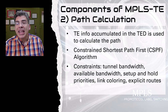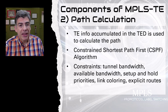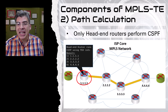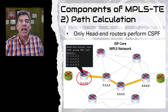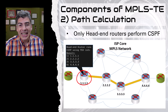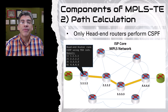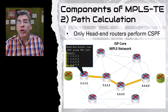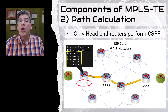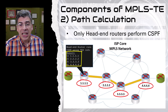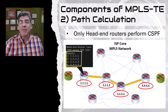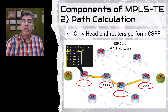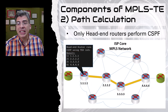Only head-end routers perform the CSPF algorithm, taking into account the information accumulated in their local TED and the configured constraints. The result of a CSPF calculation is an ordered list of IP addresses with next hops for the path of the TE tunnel, essentially defining the path through the MPLS infrastructure. This ordered list is then used by the next component of MPLS TE: path setup using RSVP-TE.